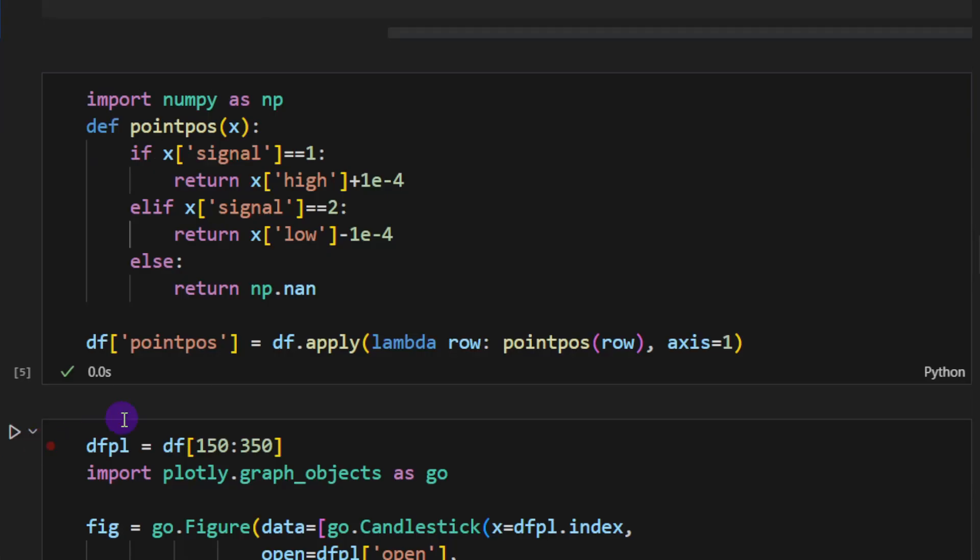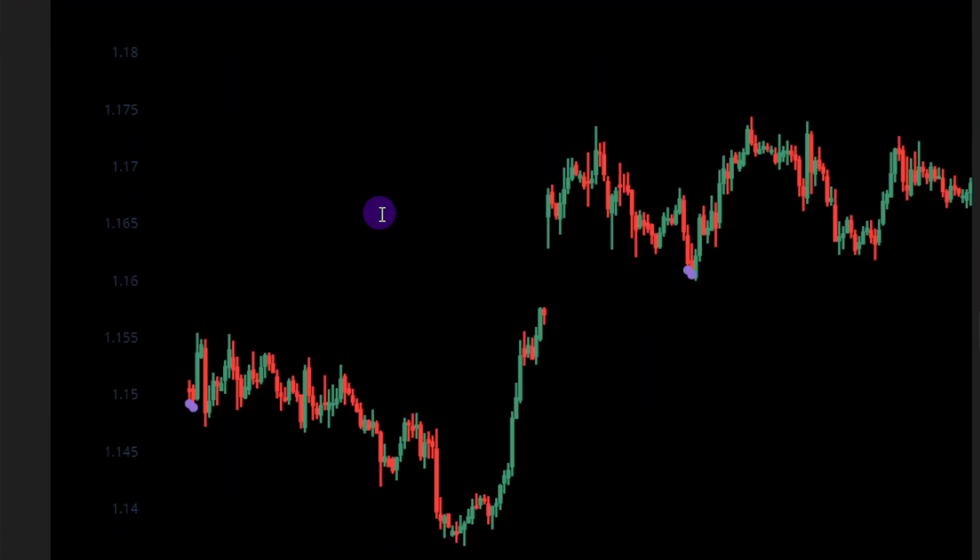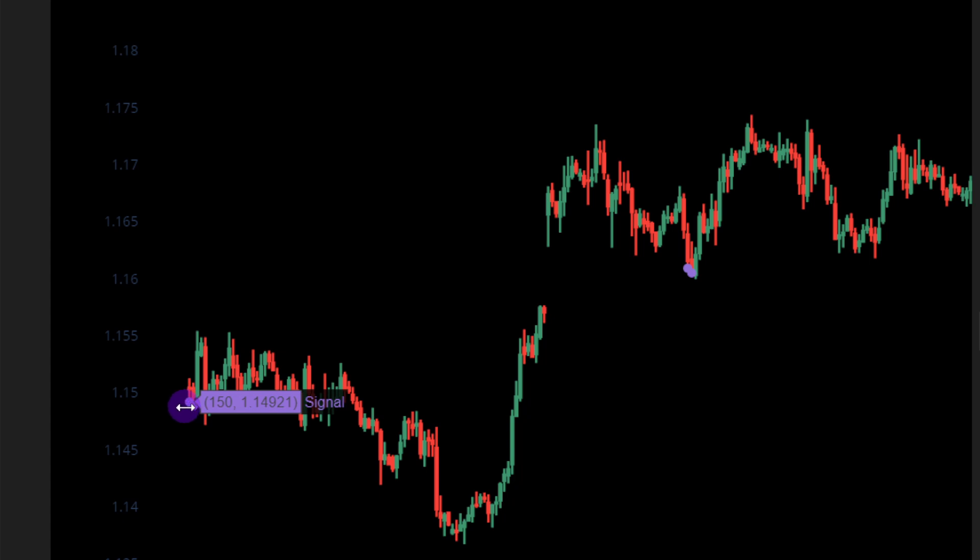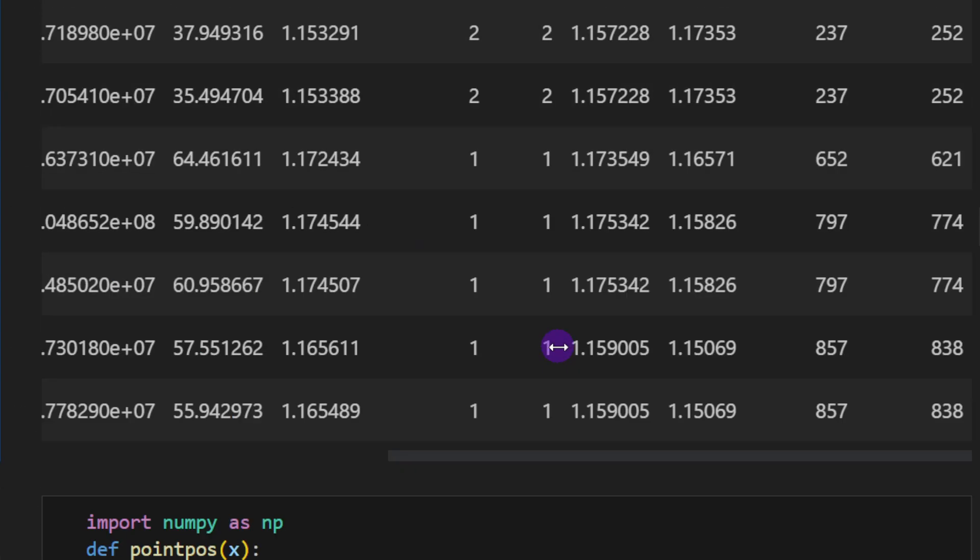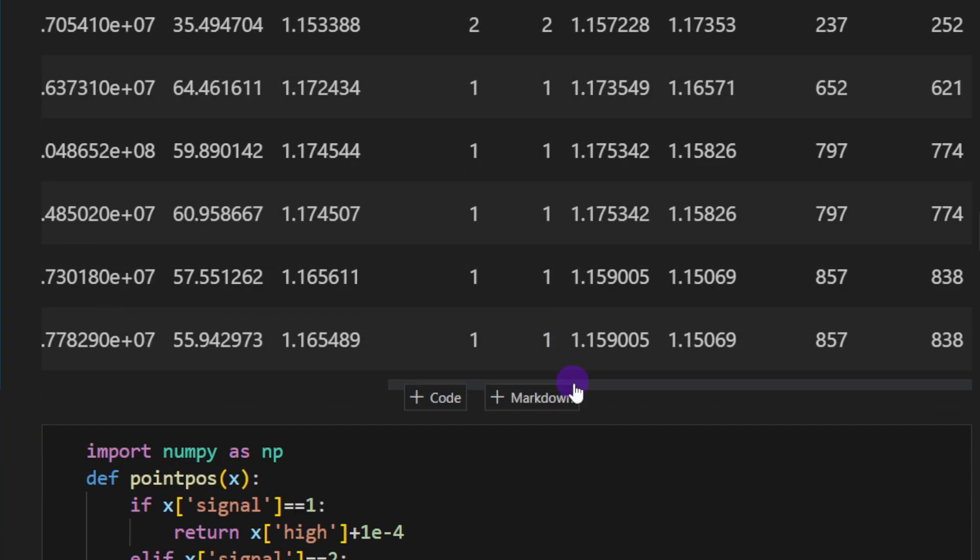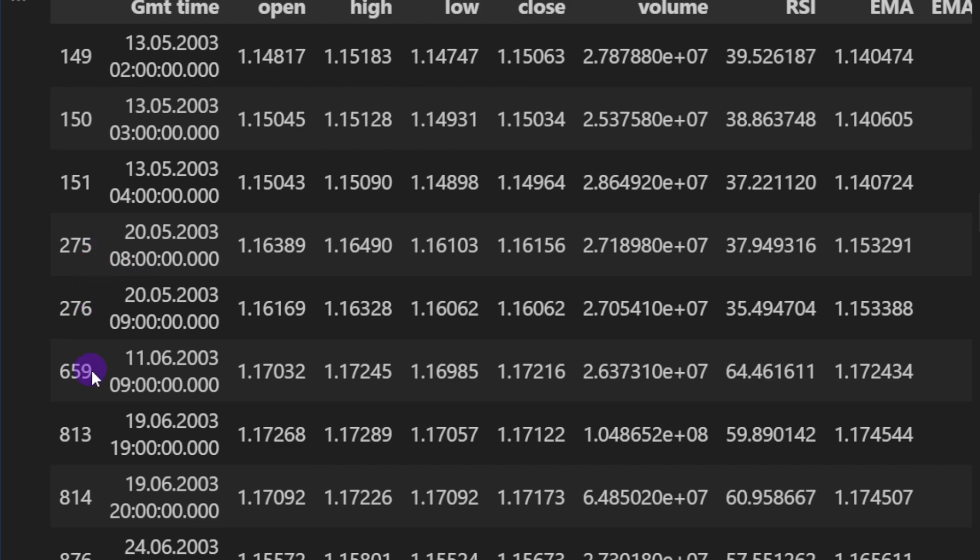Now we can visualize those signals. I'm going to plot these as points on the candles. You can check—we have a buying signal here. It's a long signal when the point is below the candle. If the point is above the candle, it's a short signal. This one is a long signal. We have two signals here—two long signals which are perfect, these are excellent signals.